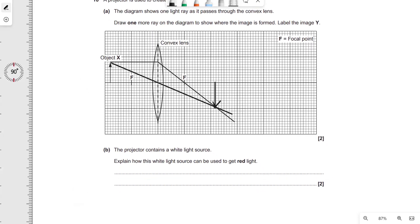Next one the projector contains a white light source explain how this white light source can be used to get red light. Well in order to do so we're going to need a red filter and the red filter will actually absorb all wavelengths but red.